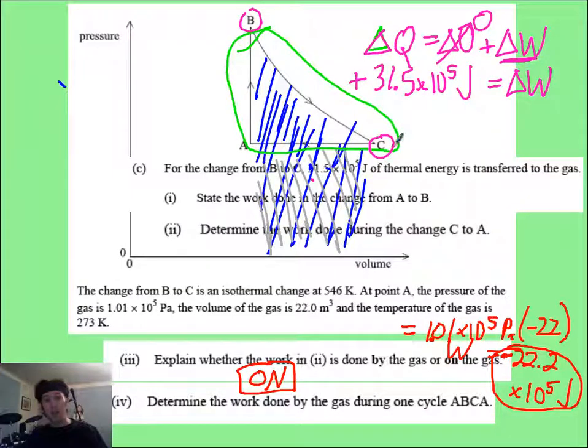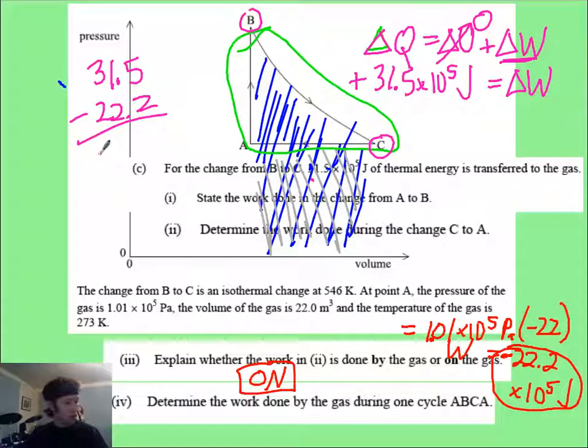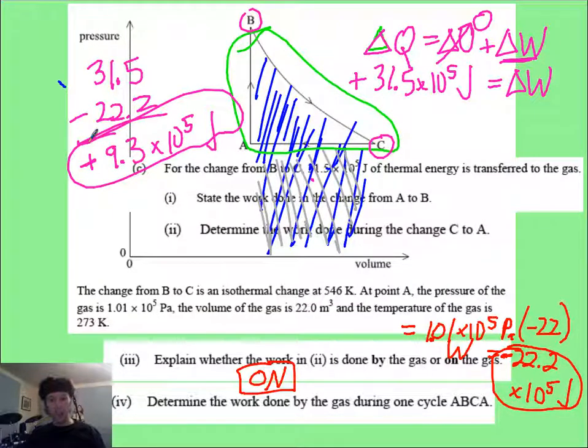And so you know if you do this much work, the 31.5 on your way to C, from C to A, you need the negative 22.2. Your answer is going to be 31.5 minus 22.2. And you end up with a total net work, that's positive, because you have a positive area here, of 9.3 times 10 to the fifth joules of work. That is it. Good night, my friends.